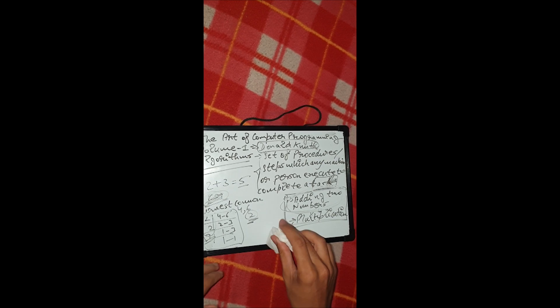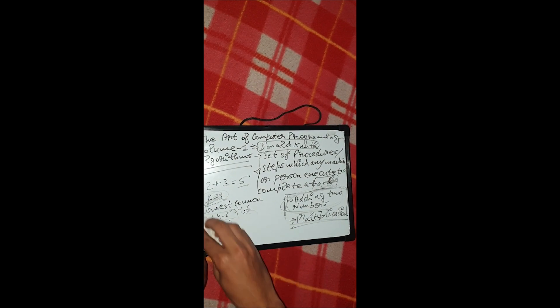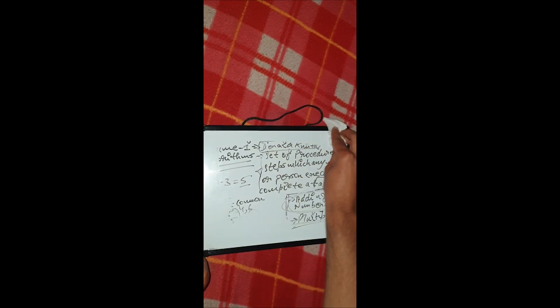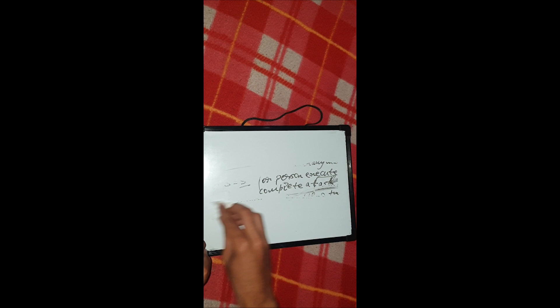So we've reached the conclusion that an algorithm is basically a set of steps that we need to execute in order to perform certain tasks. The task can be anything — either a mathematical task, or in terms of computer language, any program that we are working on.